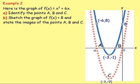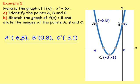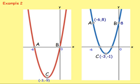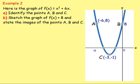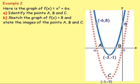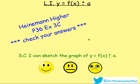State the images of the points a, b, and c — that means where those points end up. We write the image with a dash after the letter: a-dash is at negative six eight, b-dash is at zero eight, and c-dash is at negative three negative one. Putting the graphs side by side, you can see the new graph has moved up. Give the questions on page 36, exercise 3C a shot — any problems, let me know. Enjoy!